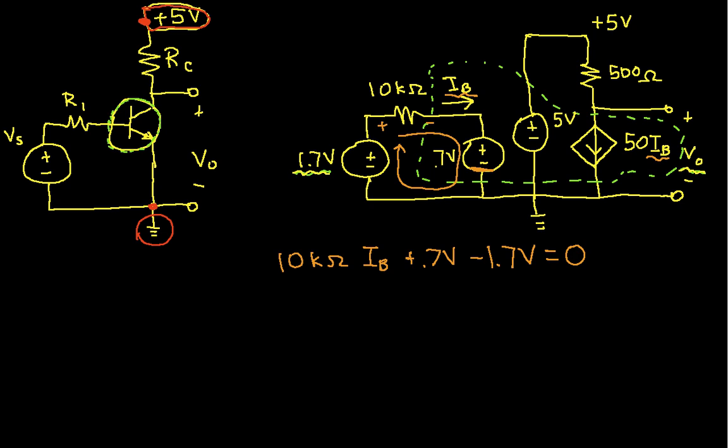Which I can then simplify to get 10k ohms I sub B is equal to 1 volt. Solving this, I get I sub B is 1 volt divided by 10k ohms, which ends up being 0.1 milliamps. So what we know now is I sub B is 0.1 milliamps.